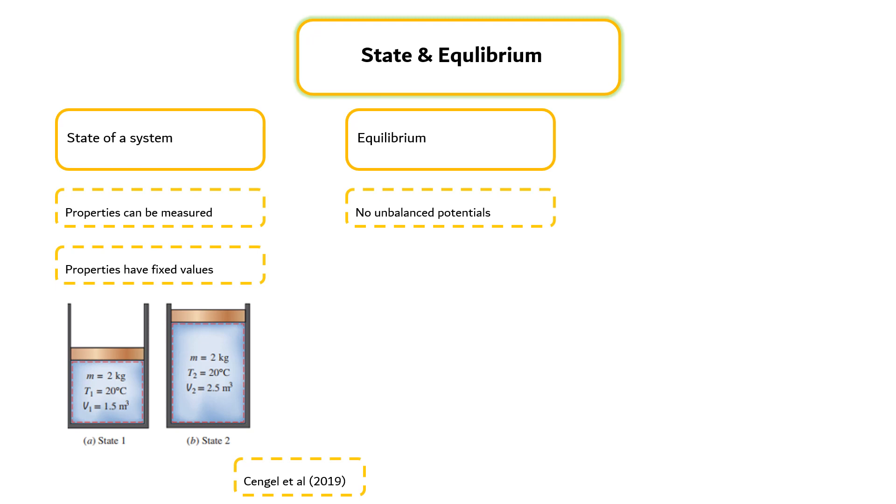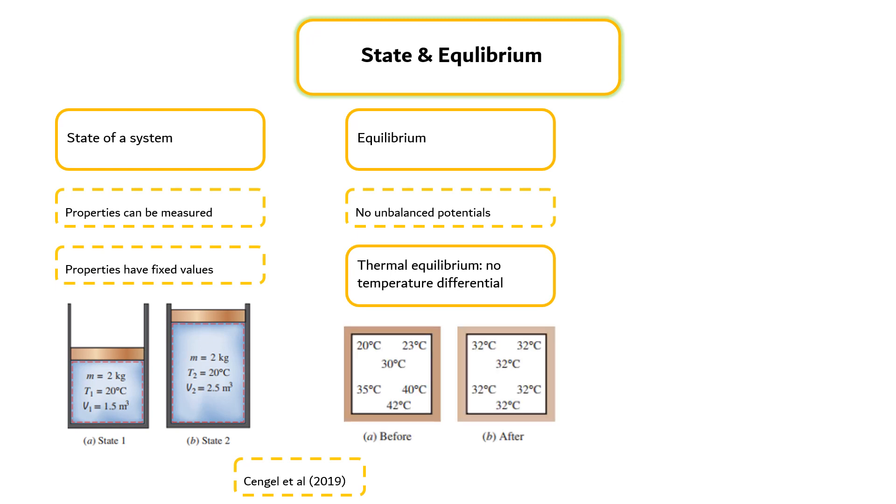For example, a system is in thermal equilibrium if the temperature is the same throughout the entire system, as shown in the figure. The system involves no temperature differential, which is the driving force for heat flow.